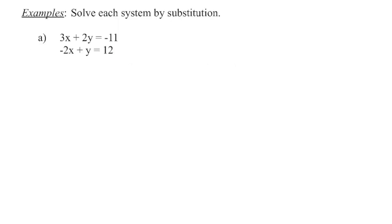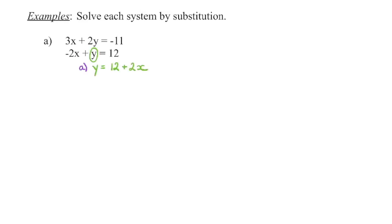Step one: we're going to choose a variable to isolate, and if possible we want to choose a coefficient of one. So if I take a look at the four variables in the first equation, this is the one I want to isolate because I will avoid having to work with fractions later. I've indicated that this is step A, so when you refer back to those procedural steps you'll know which is which.